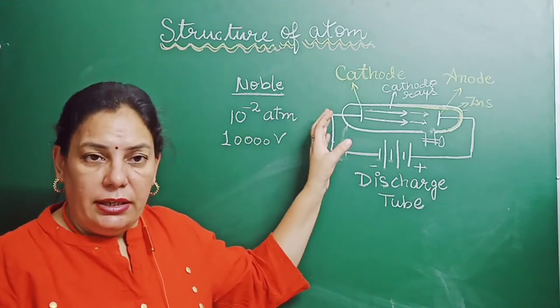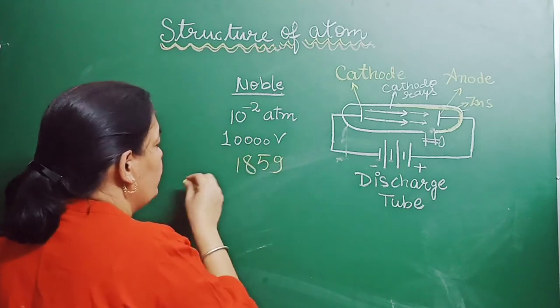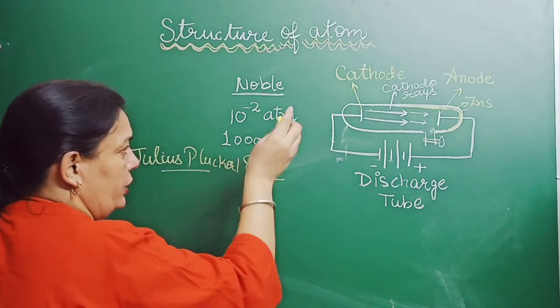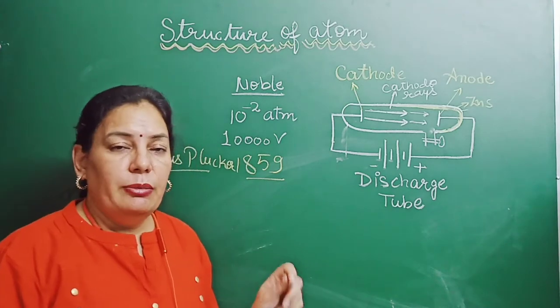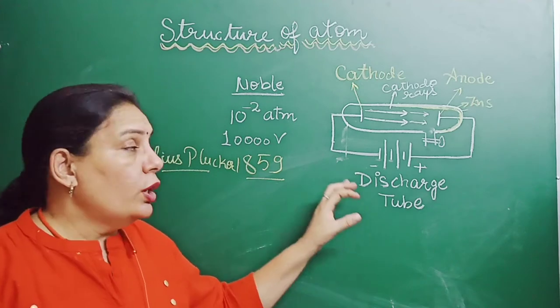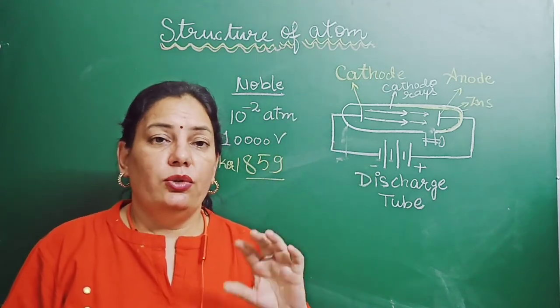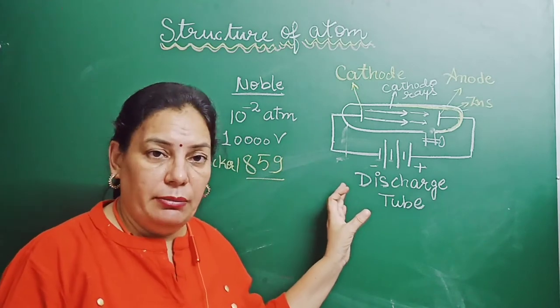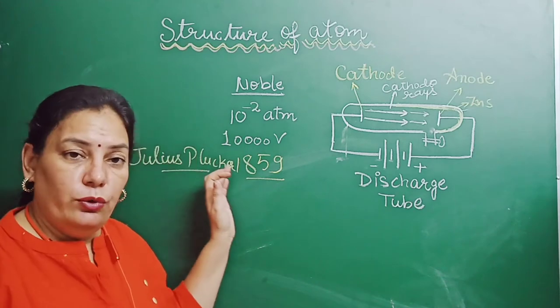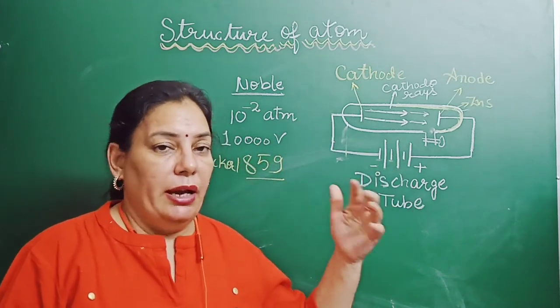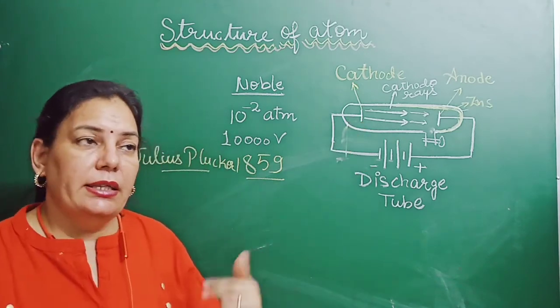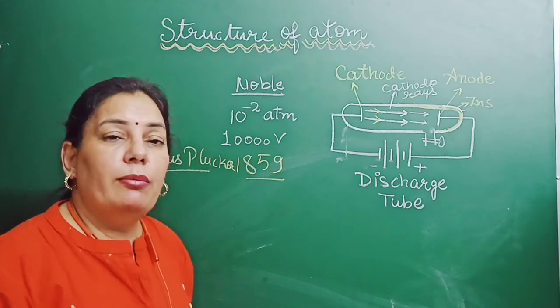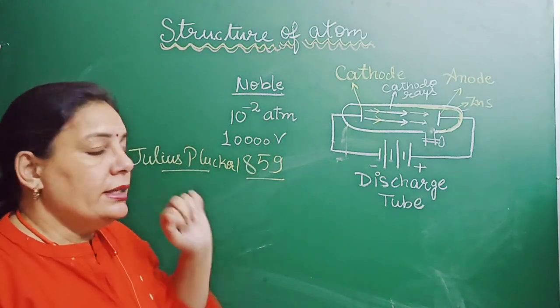Julius Plucker discovered these rays in 1859 and studied the nature of these rays by various methods. He applied electric field and magnetic field. His conclusion from this experiment was that when at very low pressure and high voltage, electric current is passed through gas filled in a discharge tube, then negatively charged particles are produced. Why did he assume these are negatively charged particles? Because these rays arise from negative terminal of the battery and move towards the positive terminal. This led to the discovery of electrons.